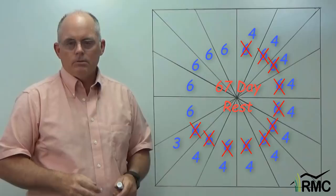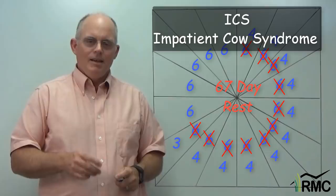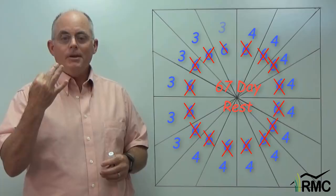He succumbs to what I call ICS, Impatient Cow Syndrome. And instead of staying for four days or six days like he originally planned, he stays for only three, cheating the rest period by three more days each time he moves.